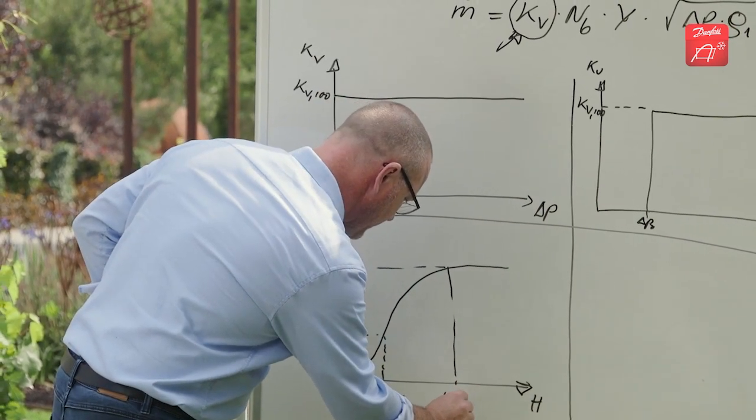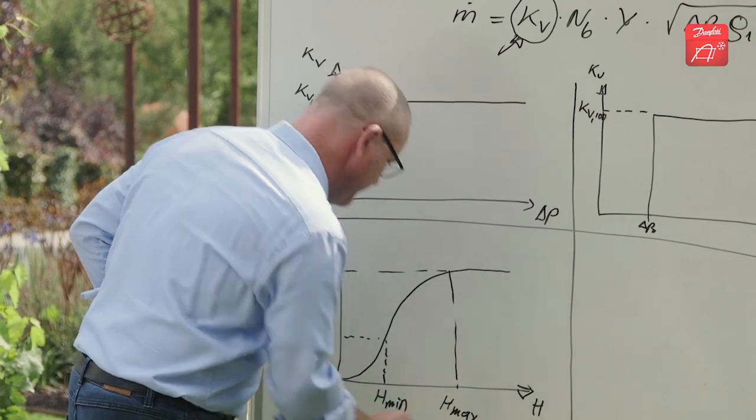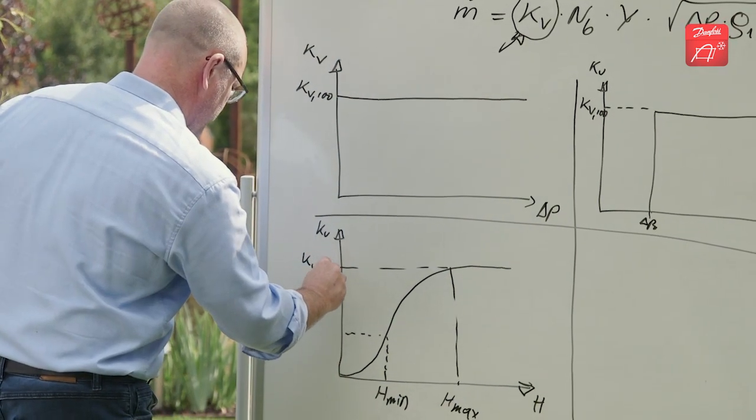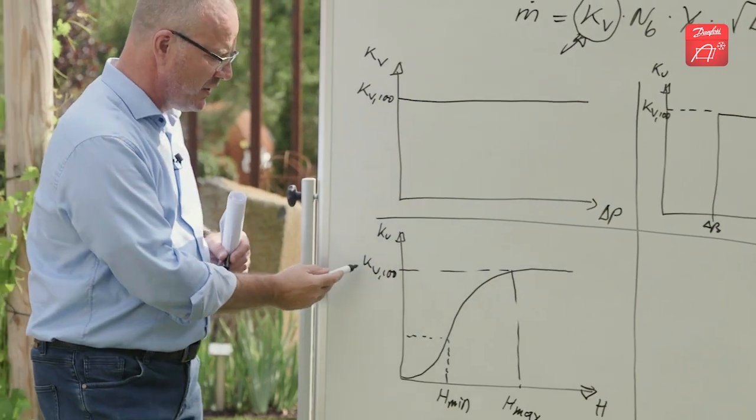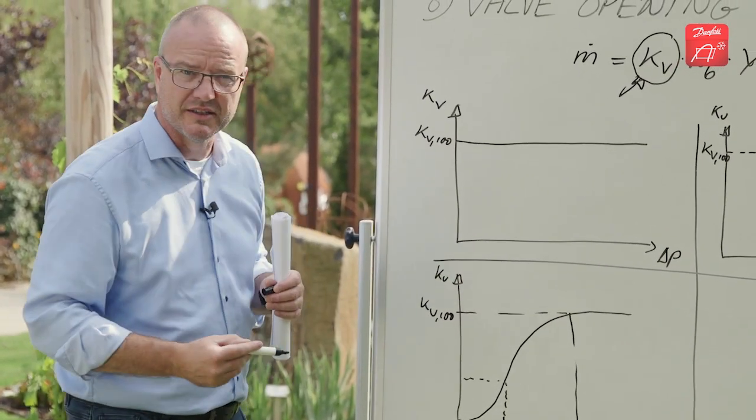Then there is the maximum opening or the 100% opening, where you get the fully open kV value. So the characteristic more or less looks like this.